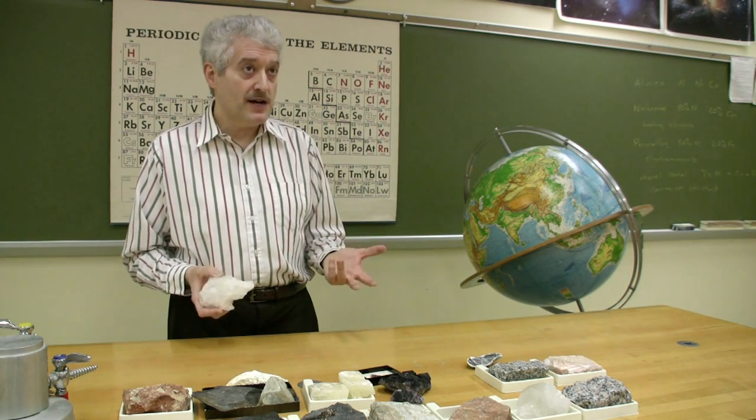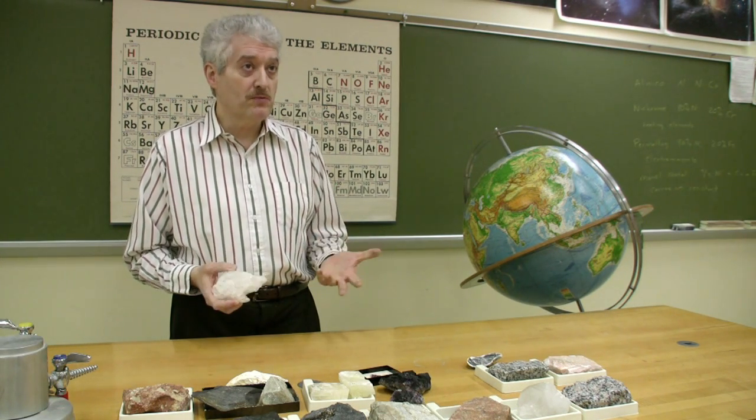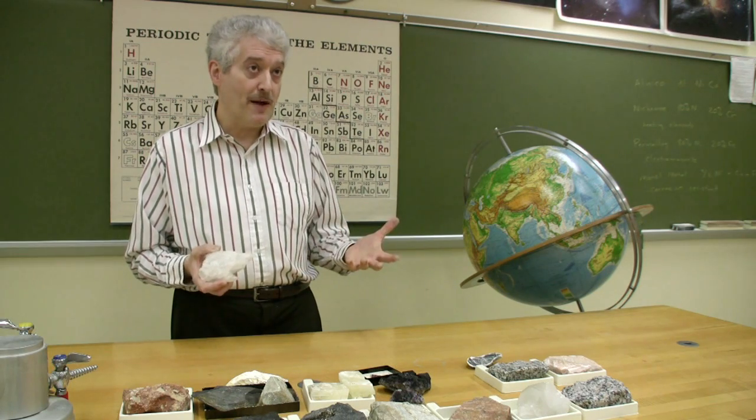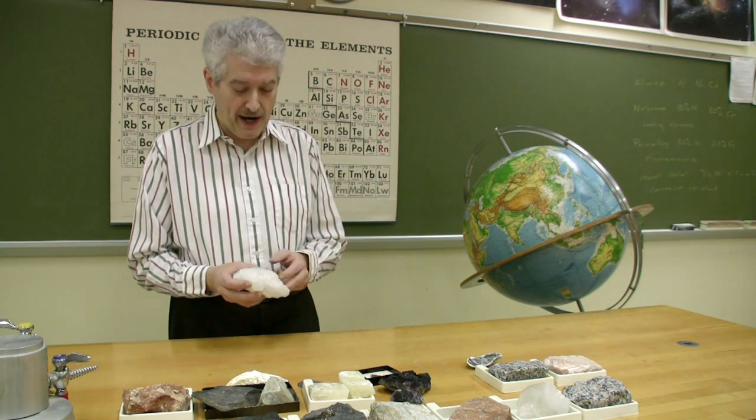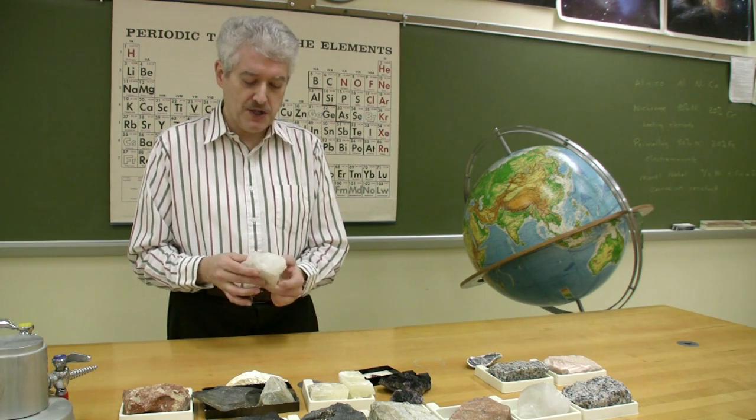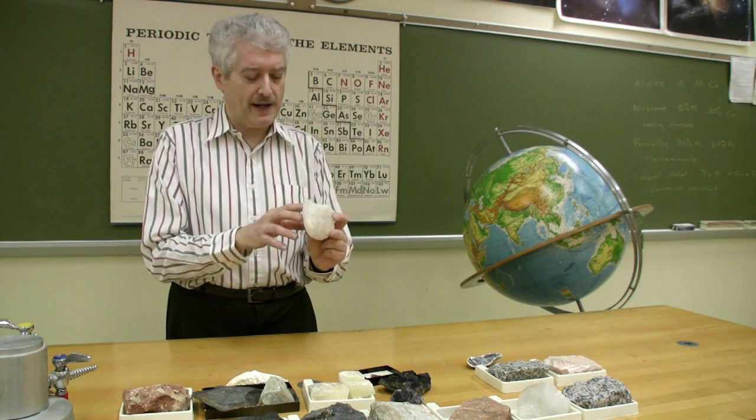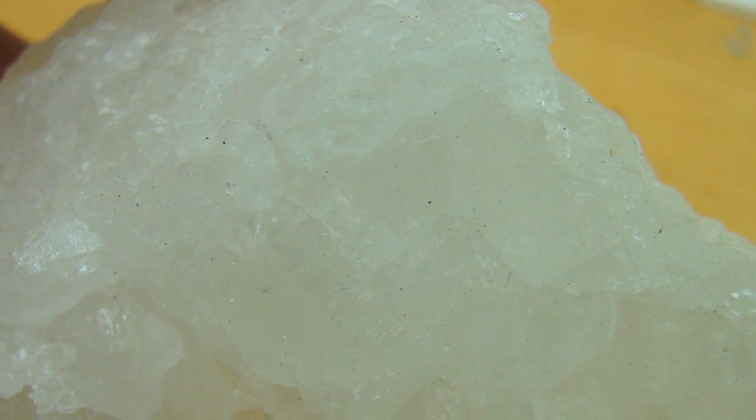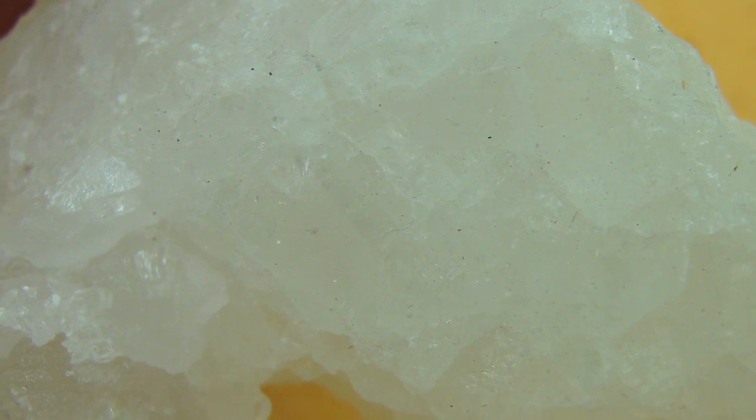And if you get high concentrations of that, which normally will be caused by evaporation of water in hot, dry areas, you will get evaporites produced like this rock salt. And if you look at it closely, you can see some crystal surfaces.